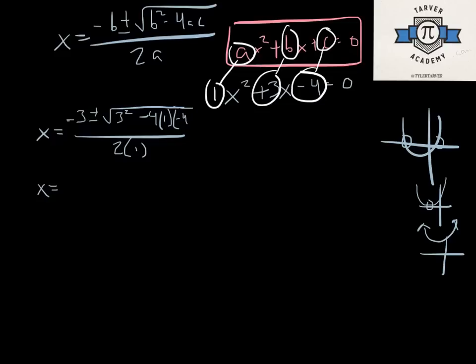Alright, so let's keep going. Let's start simplifying stuff. We'll just keep negative 3 like it is, plus or minus. We've got square root of, and then 3 squared is 9. And then negative 4 times 1 is, I keep pointing to it on my screen, but you can't see me pointing. Negative 4 times 1 is negative 4. And then negative 4 times negative 4 is positive 16. Alright, all over 2 times 1 is 2.